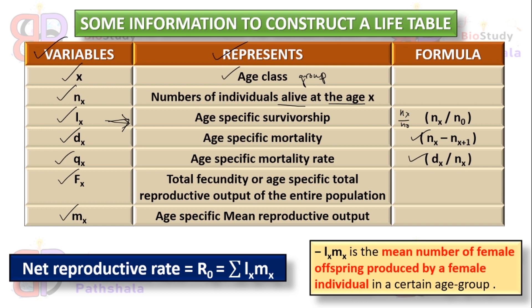The main target in constructing a life table is to measure the net reproductive rate, denoted as R₀. The new term here is lx·mx — the product of lx and mx — which is the mean number of female offspring produced by female individuals in a certain age group. For example, l₀·m₀ is the mean number of female individuals produced by females in age group zero.